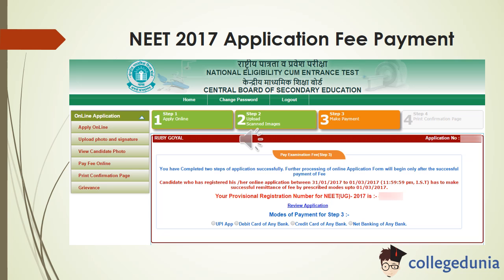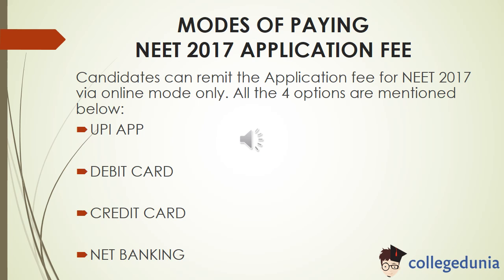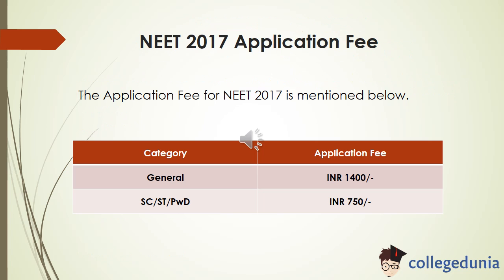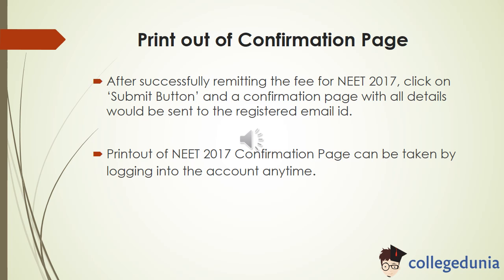We are now on the third step: NEET 2017 application fee payment. Application fees can be paid in online mode only. There are 4 options to pay fees: UPI app, debit card, credit card, and net banking of any reputed bank. Application fees for the general category is Rs 1400, and for SC, ST, and PWD categories it is Rs 750. After successfully paying the fees, click on the submit button and a confirmation page with all details will be sent to your registered email ID. A printout of the confirmation page can be taken by logging into the account anytime.